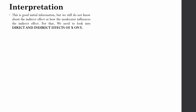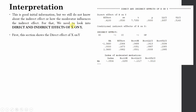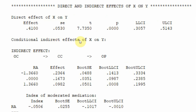We still need to assess the indirect effect and how the moderator influences it — that is moderated mediation. The direct impact of OC on OP is significant in the presence of the mediator. At average role ambiguity, the indirect effect is also significant, meaning there is mediation. This mediation is partial because the direct effect is also significant.